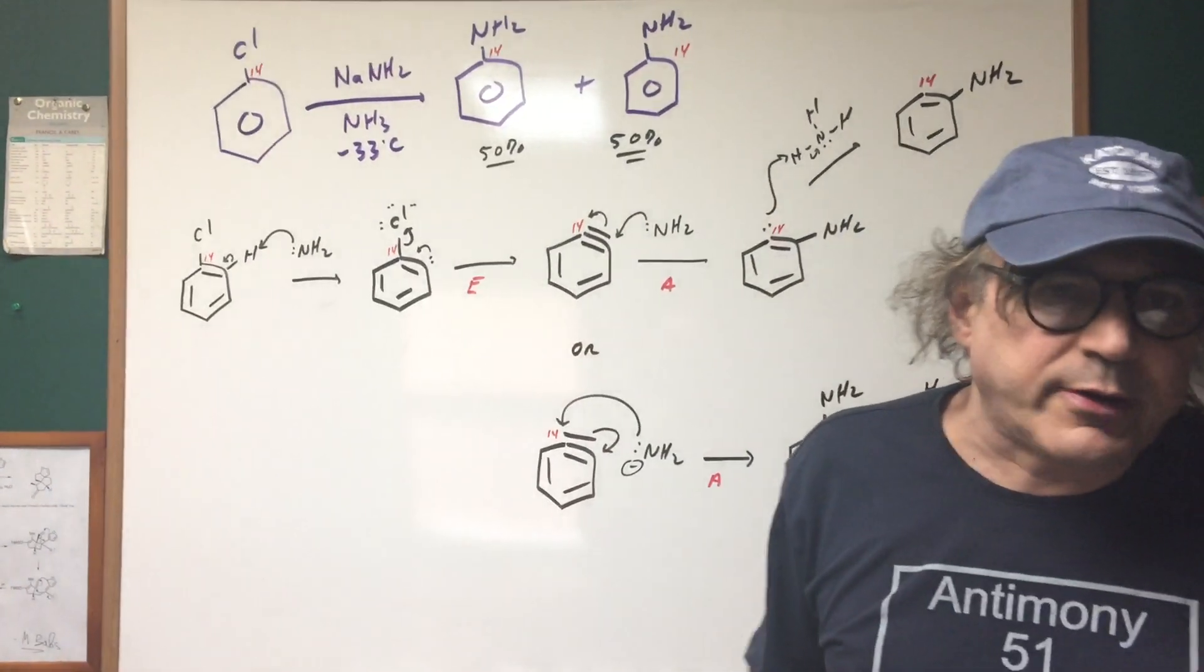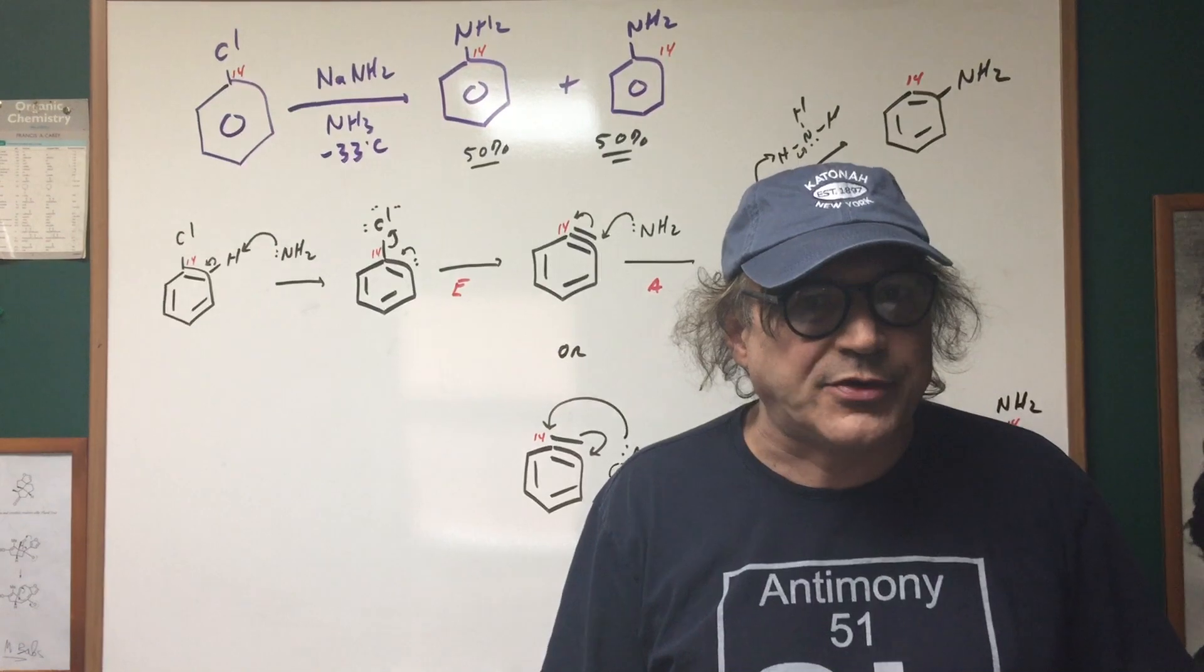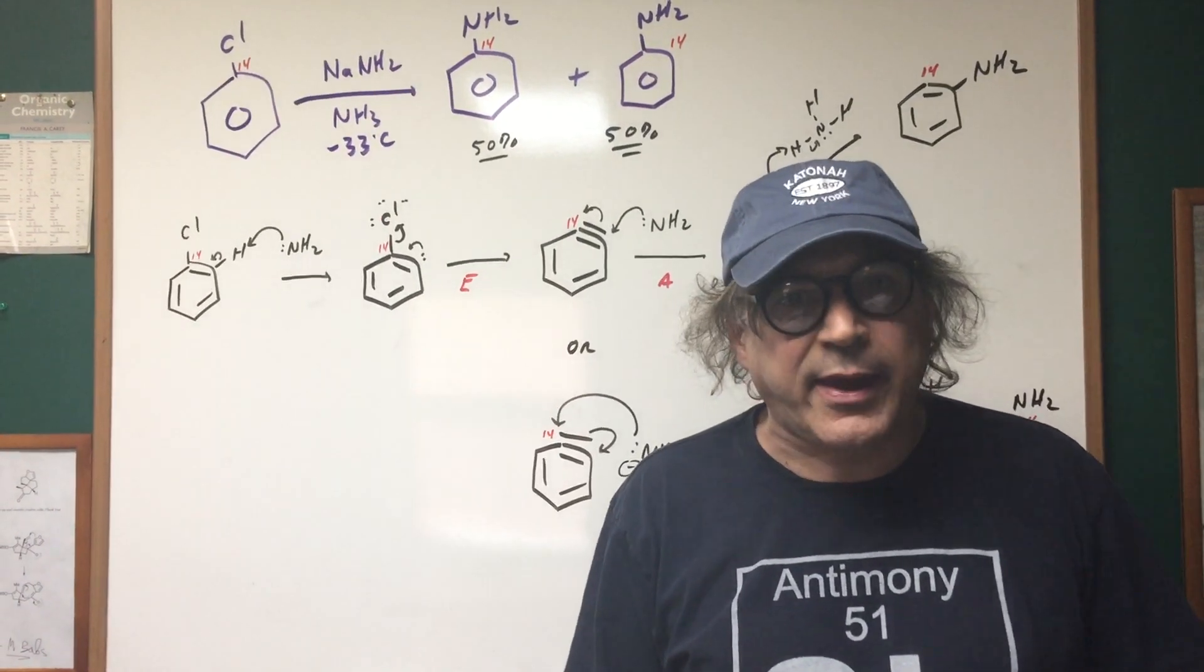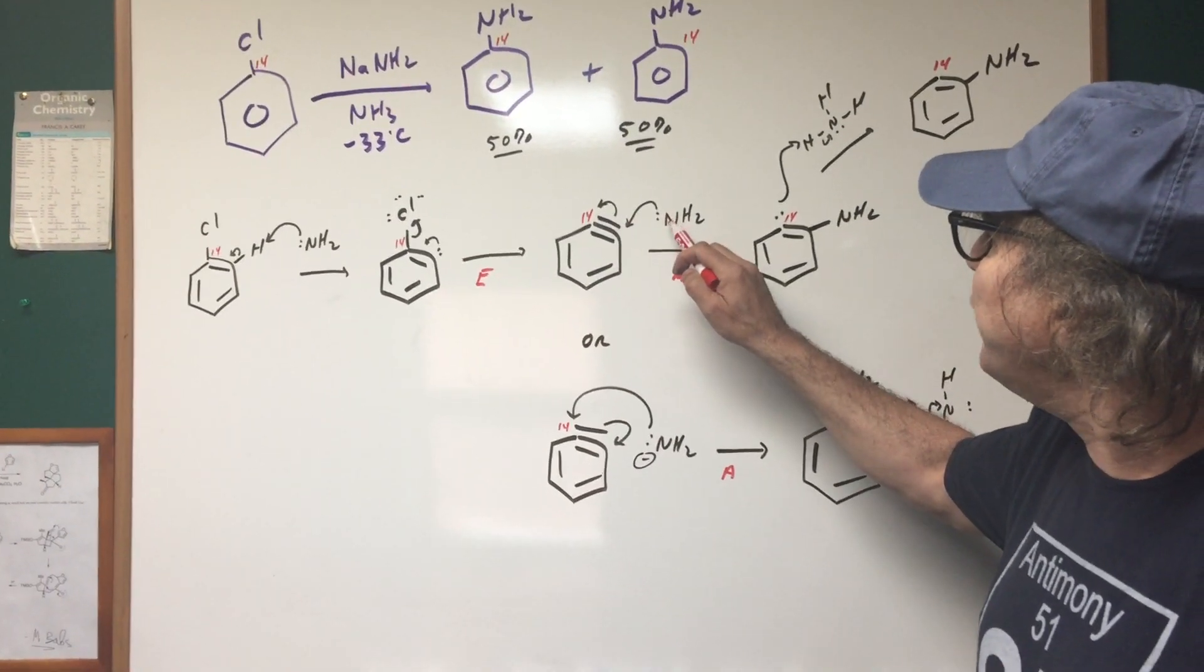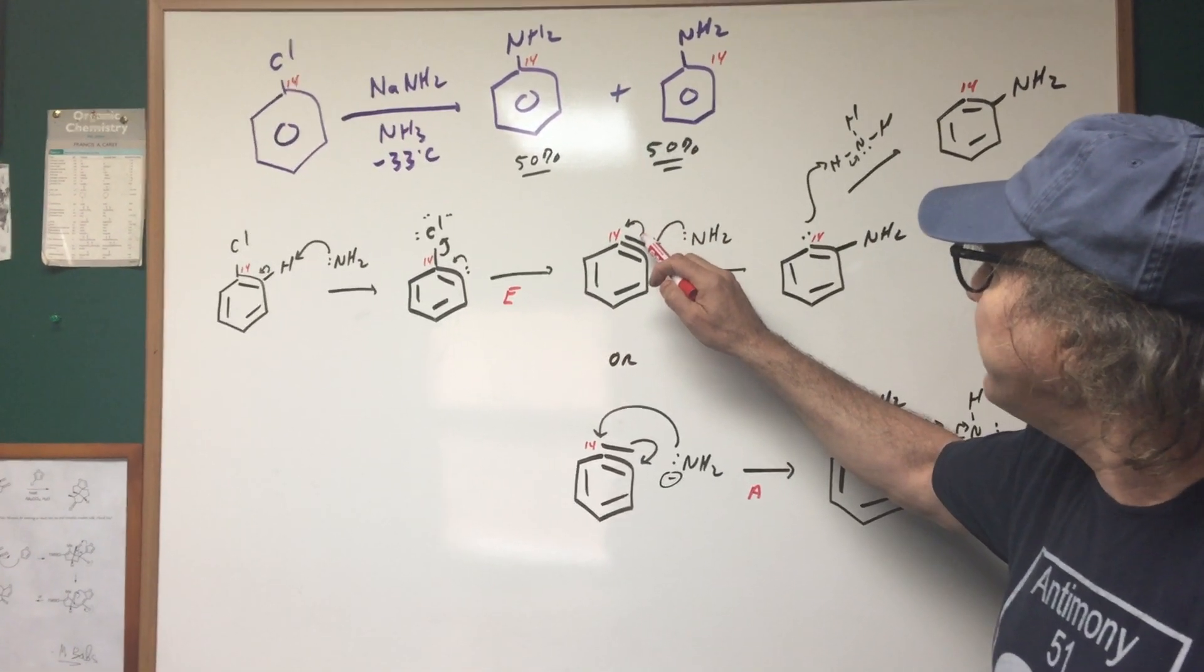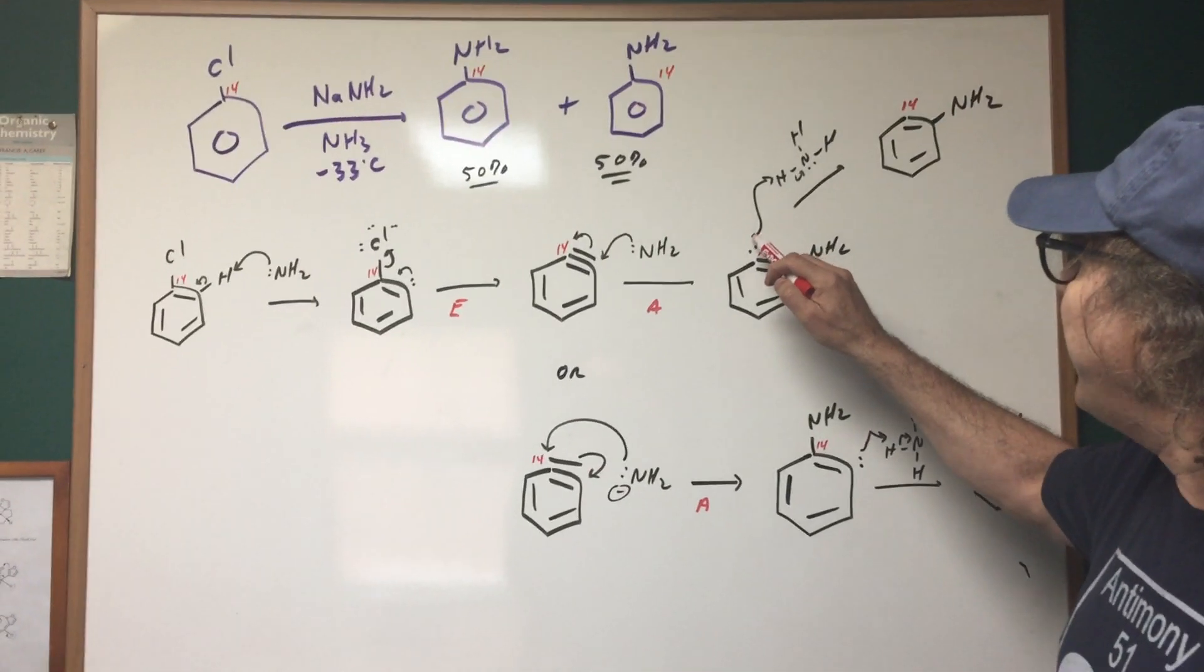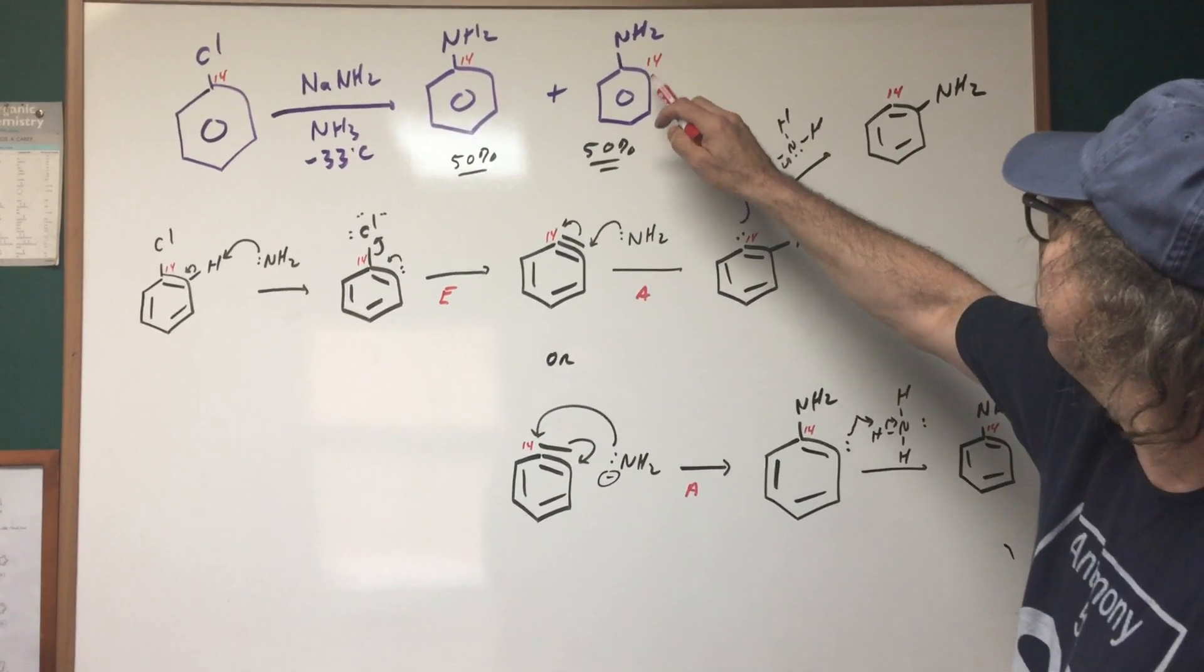This benzyne has a radioactive carbon here and a regular carbon here. If you remember in general chemistry, isotopes have virtually identical chemical and physical properties. So that means that they're both susceptible to be hit by the nucleophile. So let's hit the other carbon first. So as you can see, if the NH2 comes in and hits this carbon and this moves out, that would give me this.